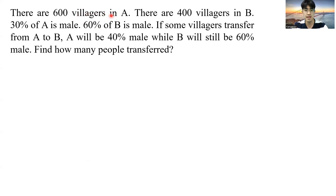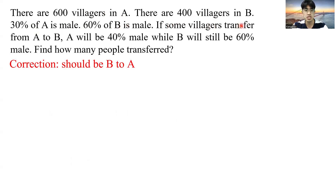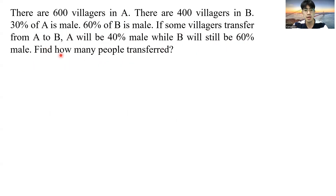There are 600 villagers in A and 400 villagers in B. 30% of A is male, 60% of B is male. If some villagers transfer from A to B, A will be 40% male and B will still be 60% male. Find how many people transfer. Since there are a lot of percentages here, it reminds me of the concentration problem.